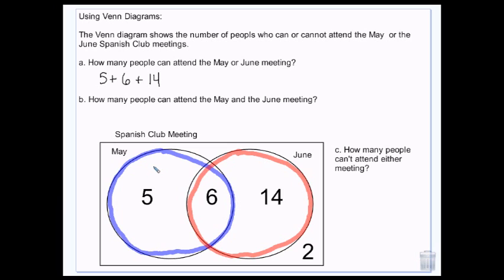There are 6 that can go to both, 5 that can only go to May, and 14 that can only go to June. So if you say OR we've got all of these, and I have to add them all together to get 25. Now if I ask how many people can attend May AND June, that's 6 — because you're in the part where the blue and red overlap. And if you ask can't attend either meeting, that's 2, because they're outside of our circles.